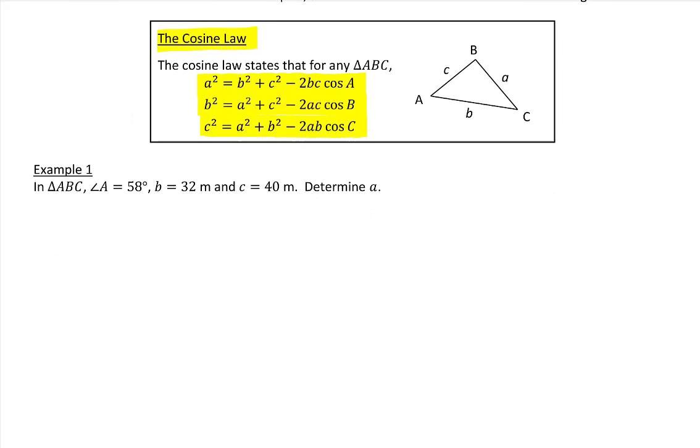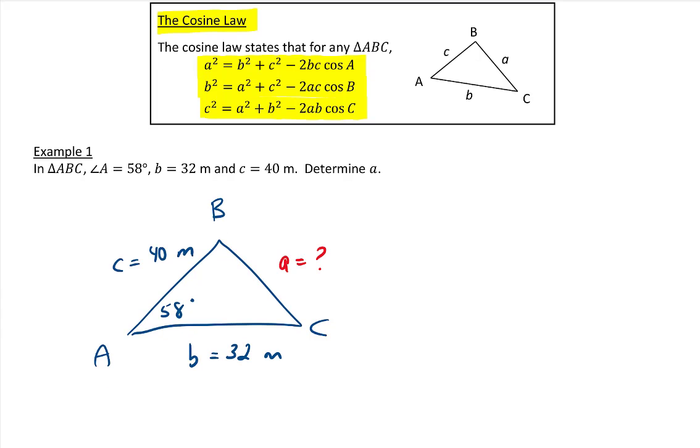First example, we have triangle ABC. And we are told that angle A is 58 degrees. Side b, which is across angle B, is 32 meters. And side c, which is across angle C, is 40 meters. We want to determine side a. This is a non-right triangle. There is not a known side across a known angle, so we need to use the cosine law.